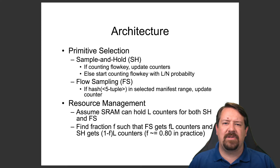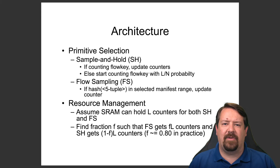The authors selected two primitives for this analysis. The first is called sample and hold, or SH for short. In this case, if the router interface is already tracking a particular flow, it will update the counters for that flow for every single packet that matches it. So unlike sampled NetFlow — where it would only capture one in a thousand or one in ten thousand packets — it tracks the flow with very high fidelity. However, it won't track every flow; if a packet comes in and it's not already being tracked, it will only begin tracking that new flow with some probability, L over N.